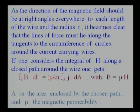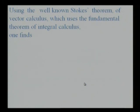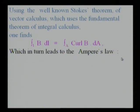If one considers the integral of H along a closed path around a wire, one gets integral B dot dL, which is mu by C integral over A of J dot dA, with B equal to mu times H. A is the area enclosed by the chosen path and mu is the magnetic permeability. Using the well-known Stokes theorem of vector calculus, one finds integral over L of B dot dL is integral over A of curl B dot dA, which in turn leads to Ampere's law: curl B is equal to mu J upon C.